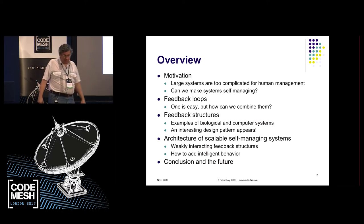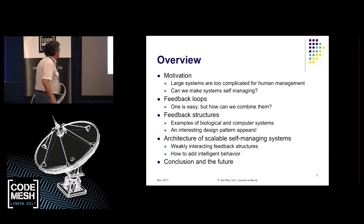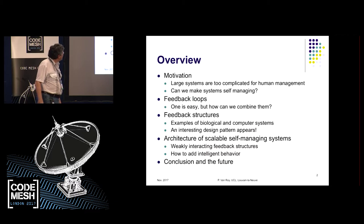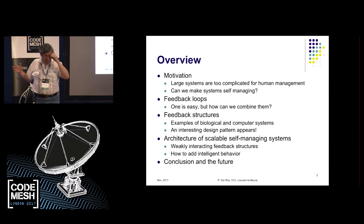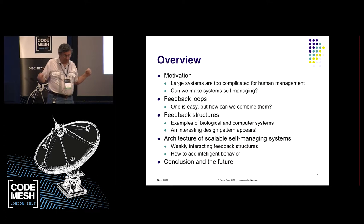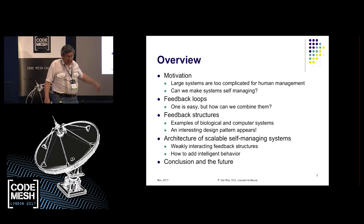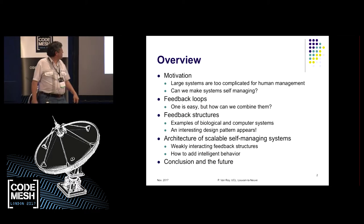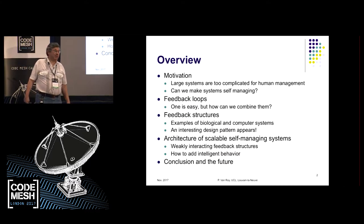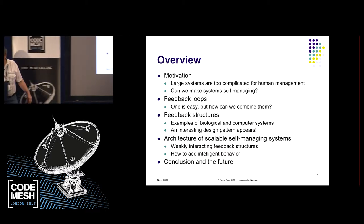We call this pattern a feedback structure. I'm going to introduce it through lots of examples — biological systems, computer systems that work — and we'll see the pattern. Then I'll talk about a bigger system called Scalaris, a large self-managing transactional key-value store based on five interacting feedback structures. Then I'll touch on intelligent behavior with deep learning, and where we're going.